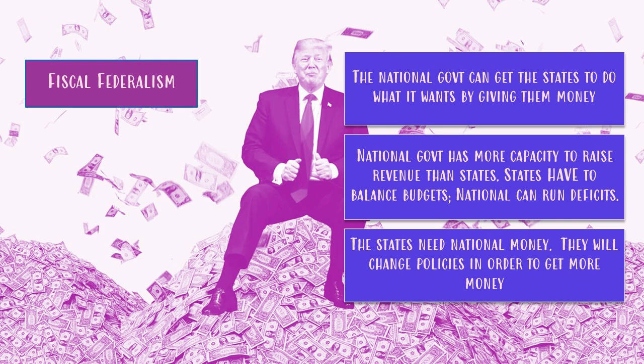Think about Memphis. If Tennessee were to raise its taxes very high to pay for its programs, a lot of people would move across the state line to Mississippi or Arkansas, because it's easy to move from state to state. You're probably not going to move to a different country because of the national government's tax rates. Also, the national government does not have to balance its budget — it runs big deficits every year and borrows money. But states are required to balance their budgets.